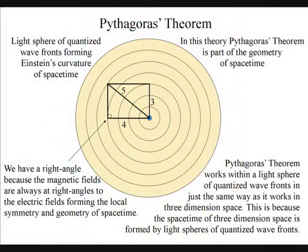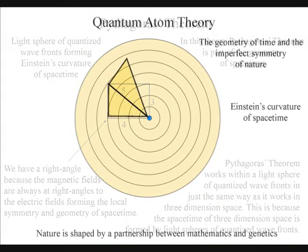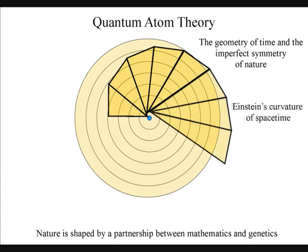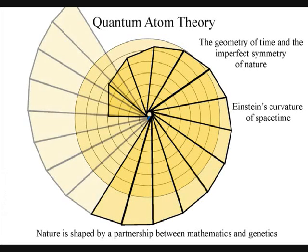The magnetic fields are always at right angles to the electric fields, forming the local space-time symmetry and geometry, that will spiral out, creating the visual and mathematical patterns of our universe.